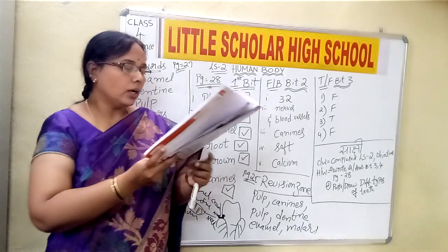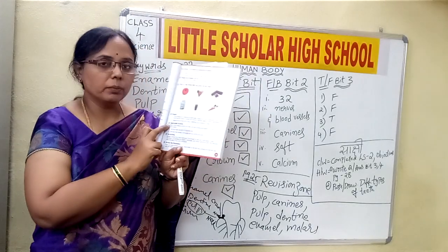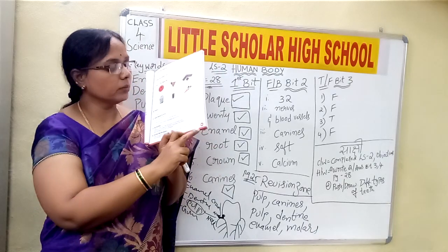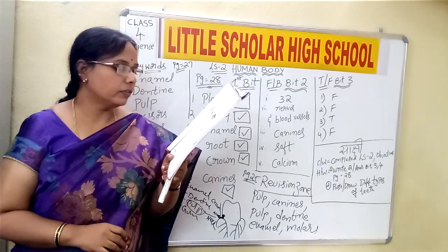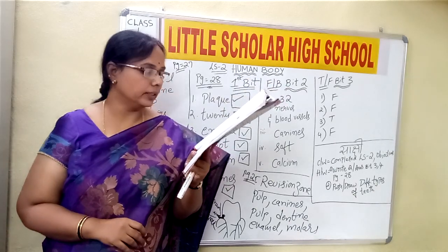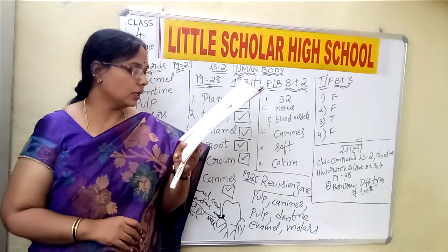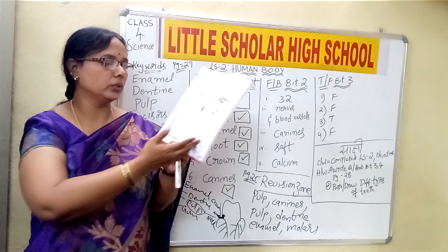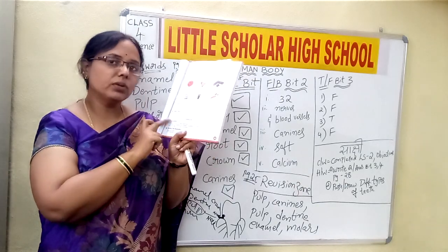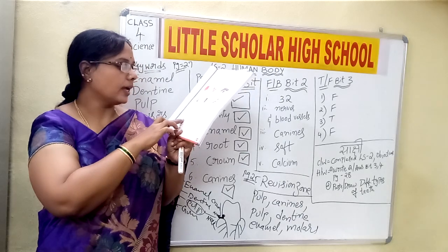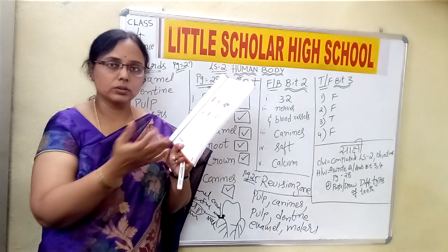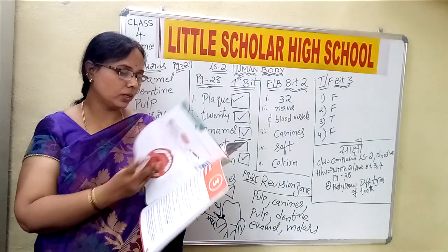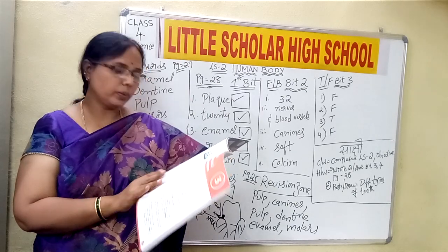On the value-based activity on page number 29, activity 9, the question is: which of the following actions will make our teeth strong and healthy? Pick the correct option. Option A: we must have calcium-rich food like milk and milk products — yes, so put a tick mark on A. Option B: we must have sweets, chocolates, and fizzy drinks like colas — that is wrong. So the correct option is A. Just put a tick mark at A.